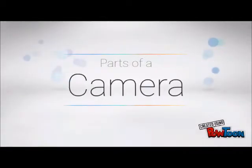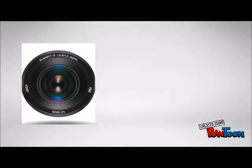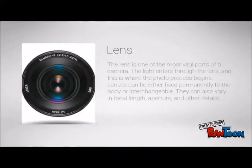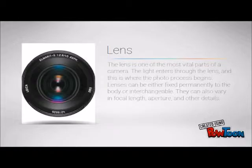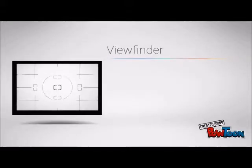Next up is the parts of a camera. The first part is the lens. The lens is one of the most vital parts of a camera. The light enters through the lens and this is where the photo process begins. They can be either fixed permanently to the body or interchangeable. They can also vary in focal length, aperture, and other details.